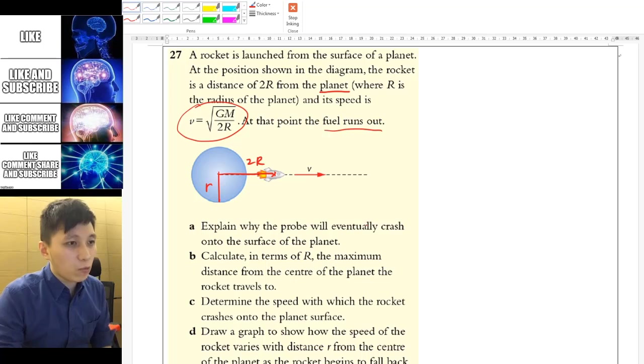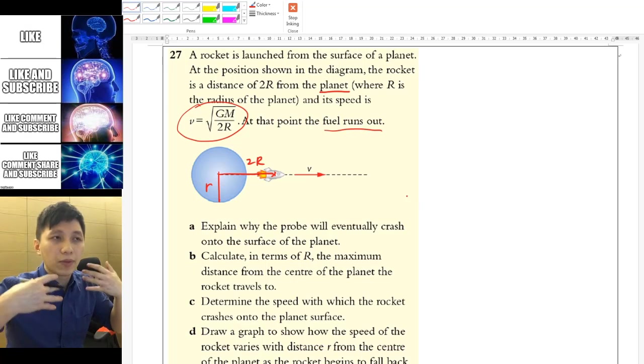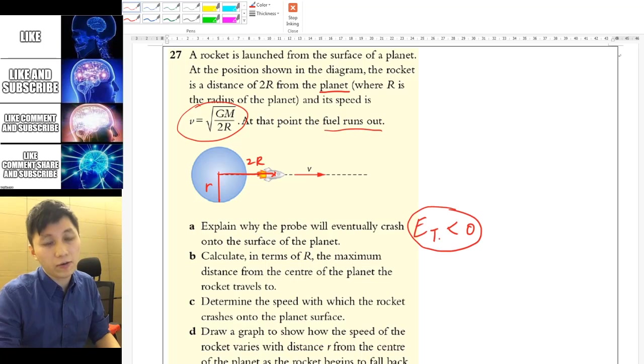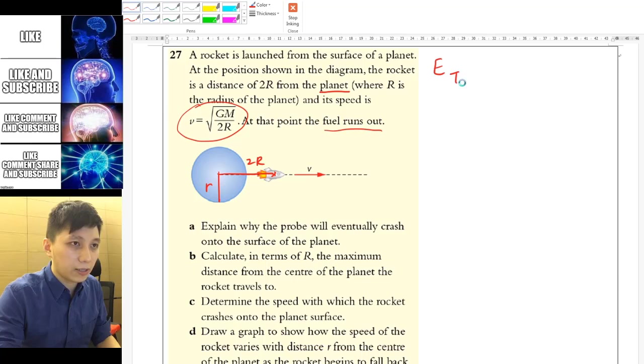For part A, explain why it will eventually crash on the surface of the planet. So if it can crash, that means it cannot escape. So this is some idea that you should have. That means for the total energy, it's going to be smaller than zero. So this is something that you want to find out and show to the marker obviously, to your audience obviously. And so what we want to find is to evaluate the total energy.